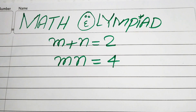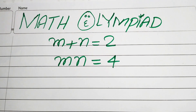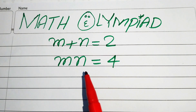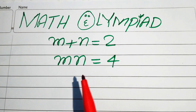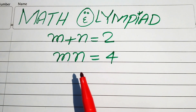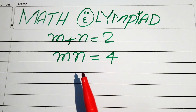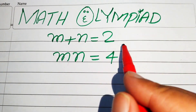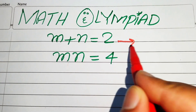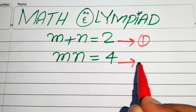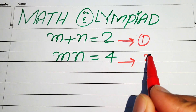Hello everyone, welcome. We solve this algebra problem where m plus n equals 2 and m times n equals 4. We need to find the values of m and n. We call these equation number 1 and equation number 2.